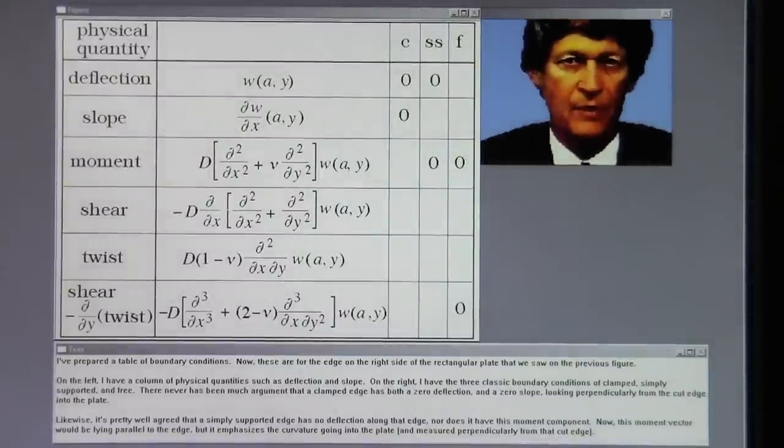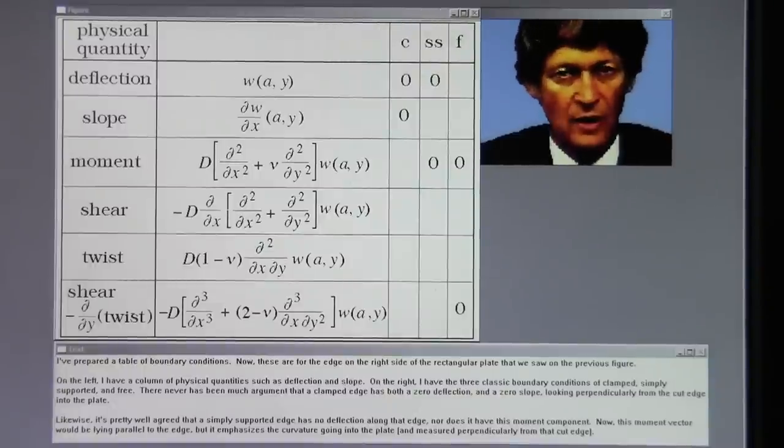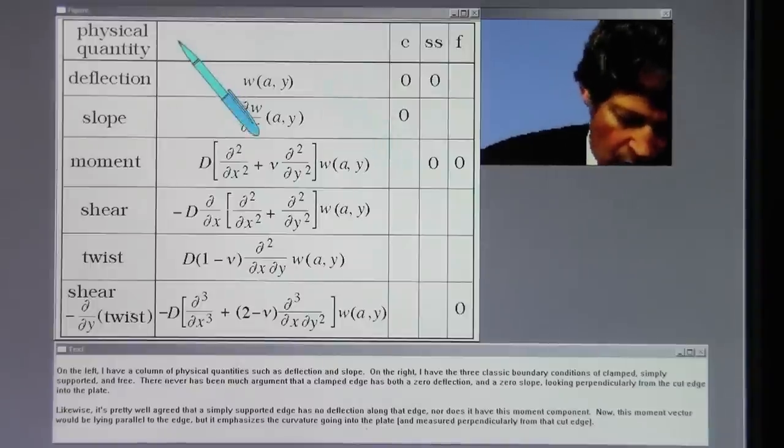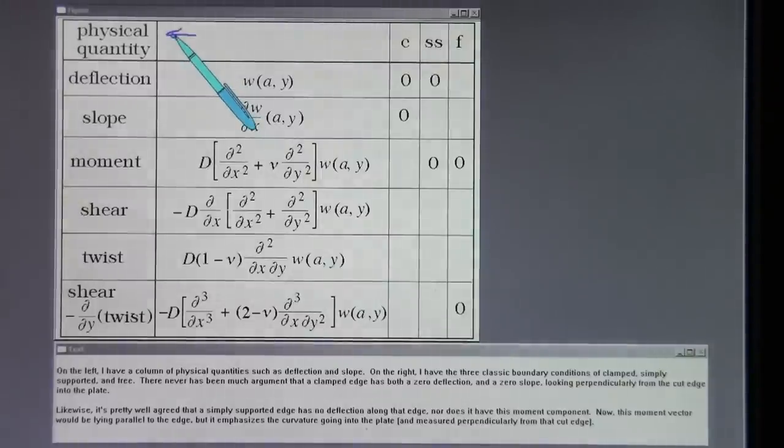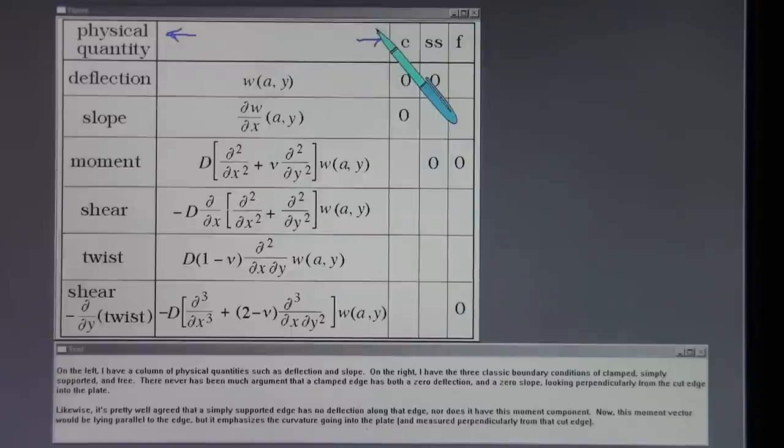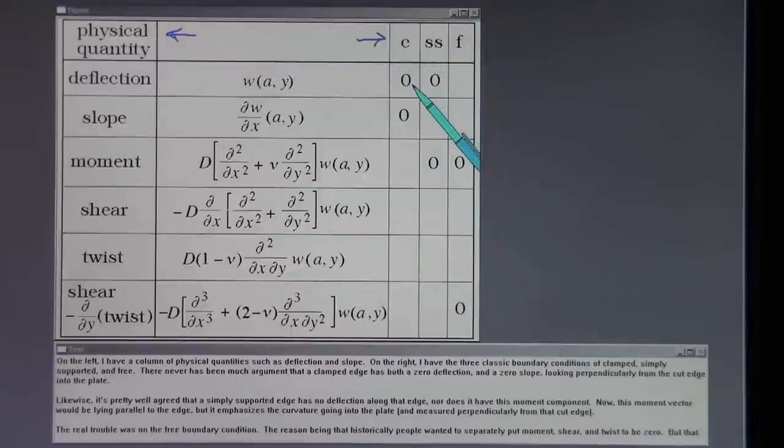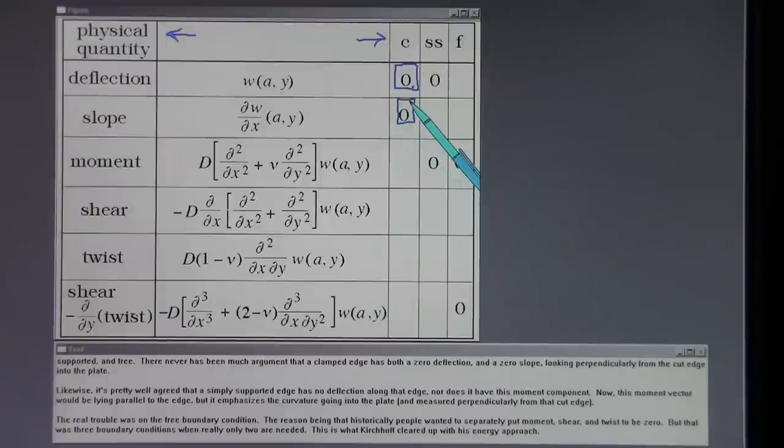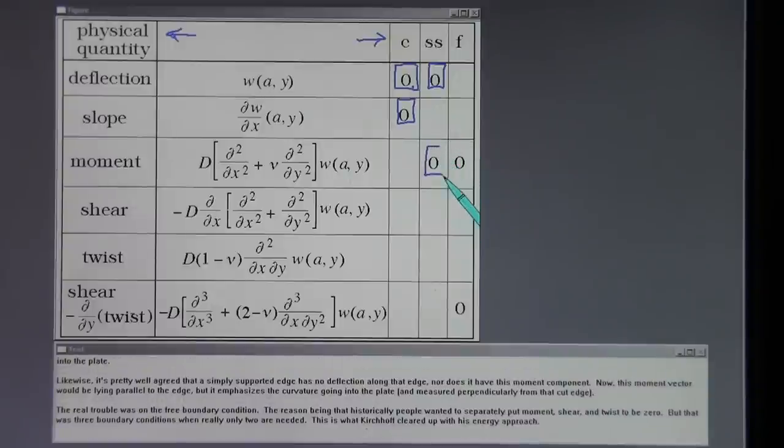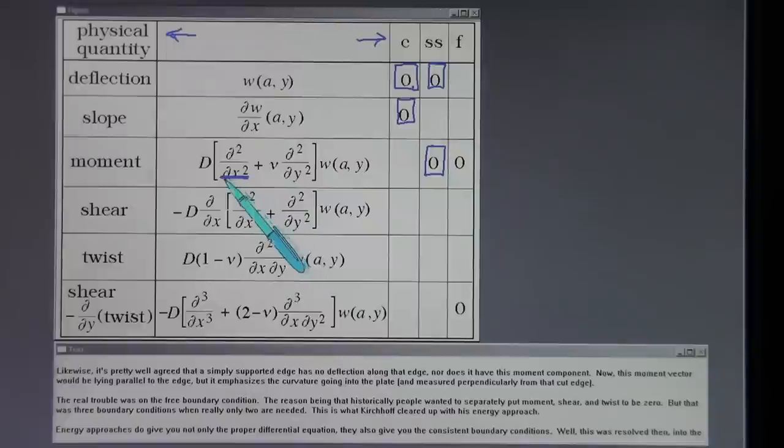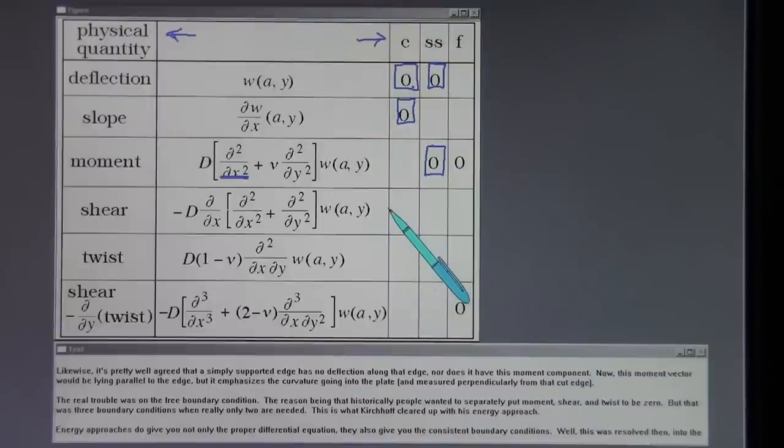I've prepared a table of boundary conditions. Now these are for the edge on the right side of the rectangular plate that we saw in the previous figure. On the left, I have a column of physical quantities such as deflection and slope. On the right, I have the three classic boundary conditions of clamped, simply supported, and free. There never has been much argument that a clamped edge has both a zero deflection and a zero slope looking perpendicularly from the cut edge into the plate. Likewise, it's pretty well all agreed that a simply supported edge has no deflection along that edge, nor does it have this moment component. Now this moment vector would be lying parallel to the edge, but it emphasizes the curvature going into the plate and measured perpendicularly from that cut edge.